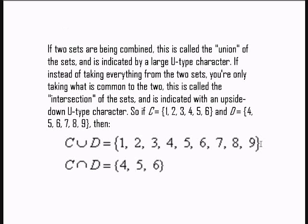So if C equals {1, 2, 3, 4, 5, 6} and D equals {4, 5, 6, 7, 8, 9}, then the union of C and D is {1, 2, 3, 4, 5, 6, 7, 8, 9}, and the intersection of C and D is {4, 5, 6}.